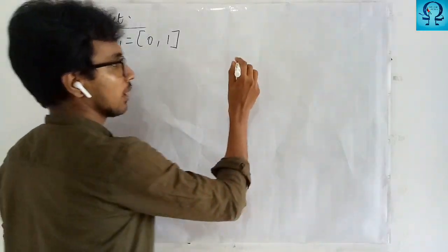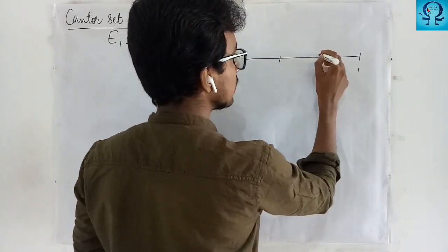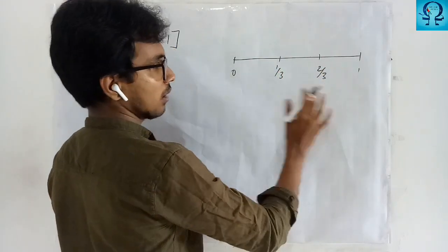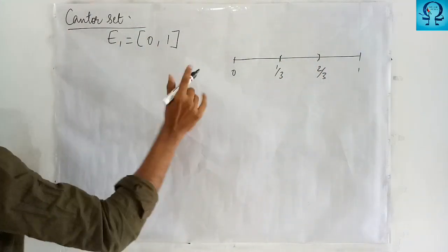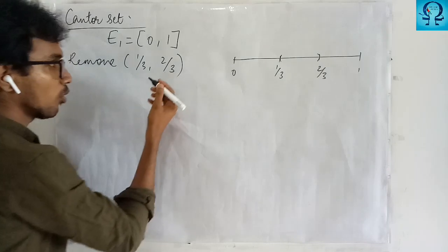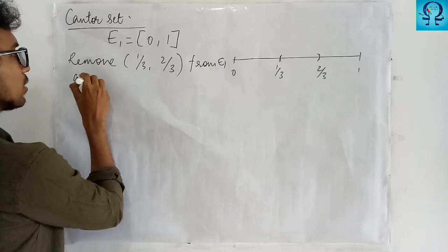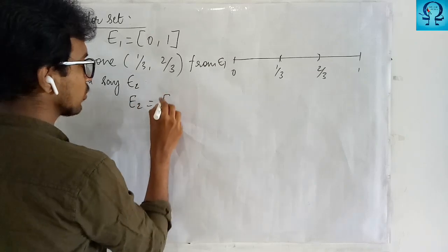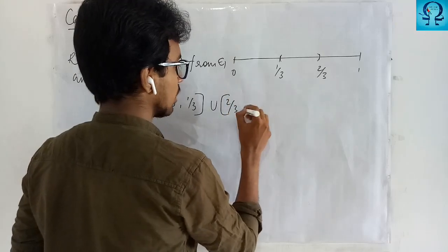What I am going to do is take this interval [0, 1] and split it into 3 equal parts. I am going to remove the middle open segment from E1. So my E2 will be the union of [0, 1/3] union [2/3, 1].